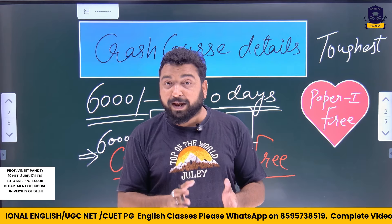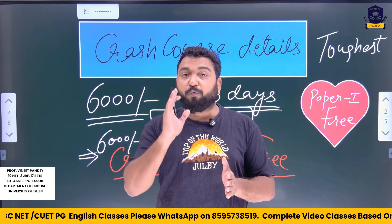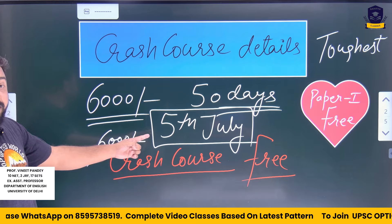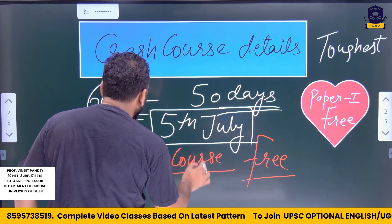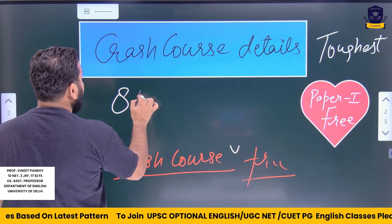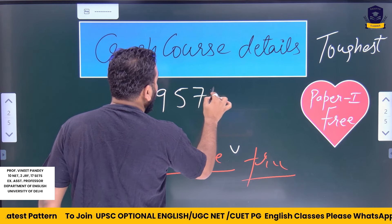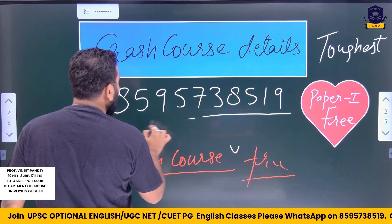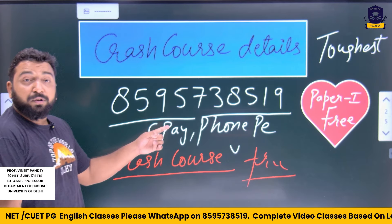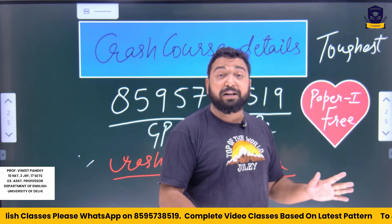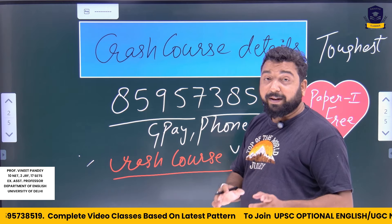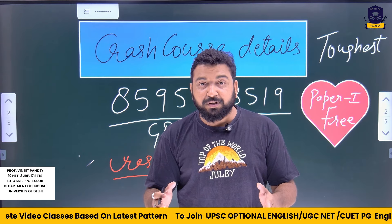If you want to qualify, it's quite simple — if you want to be a star, learn from the star. The offer's last date is 5th July. To join, please save this number to save your time, money, and energy. The number for UPI payments is 8595738519. You can use Google Pay, PhonePe, or other options. No need to make calls or have lengthy discussions — time is money. Make a payment of 6000 before 5th July and get all the benefits.